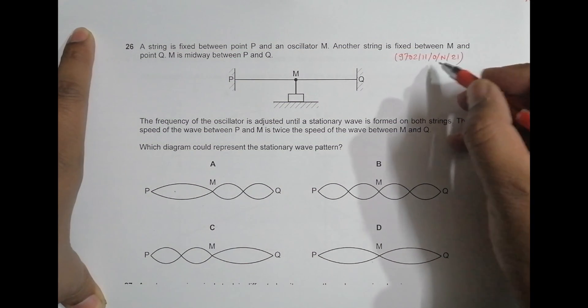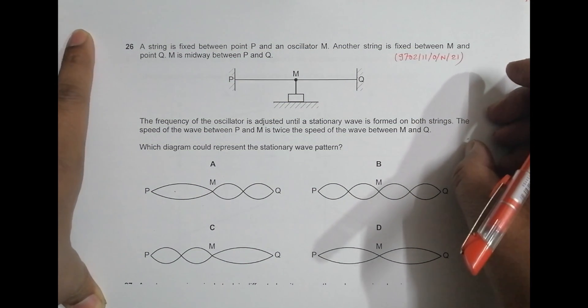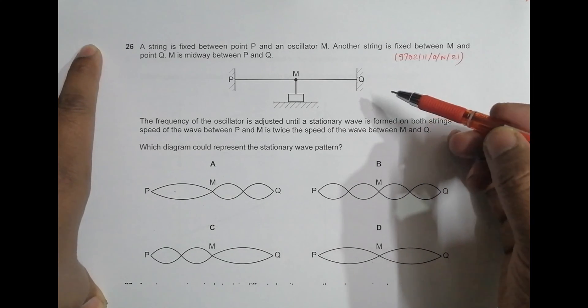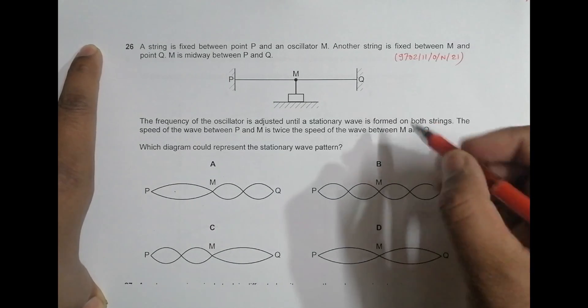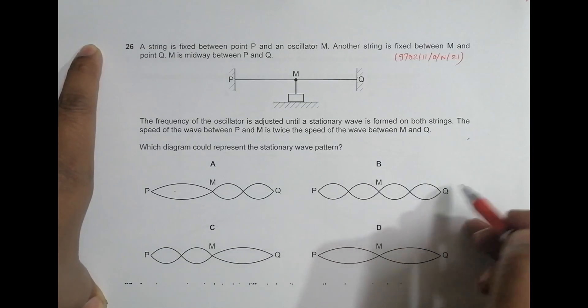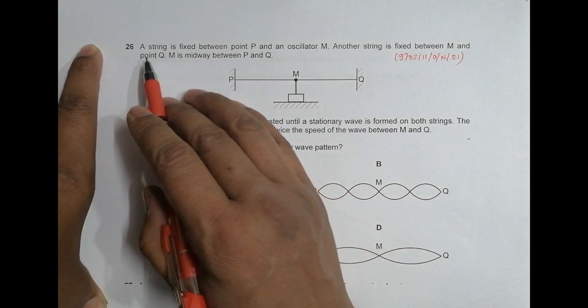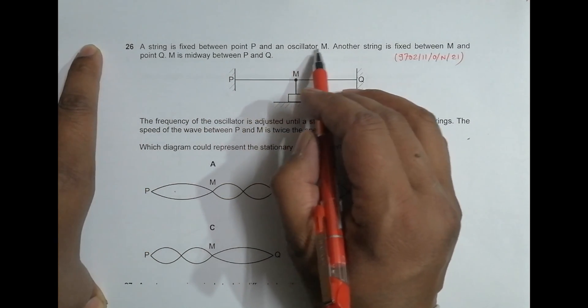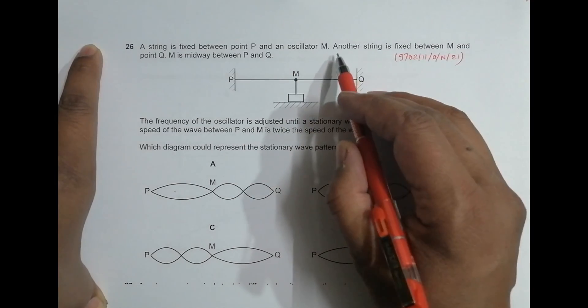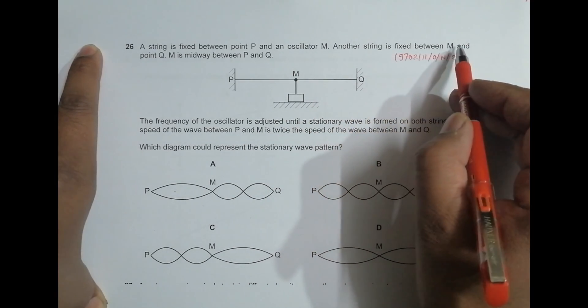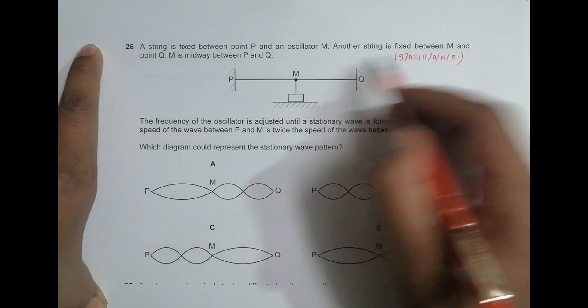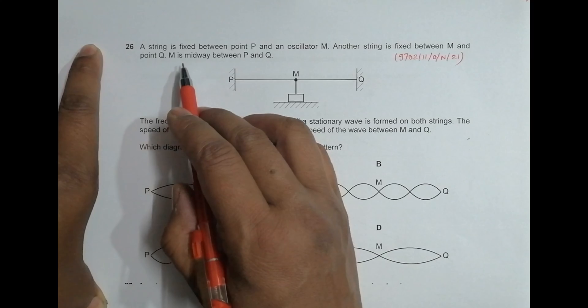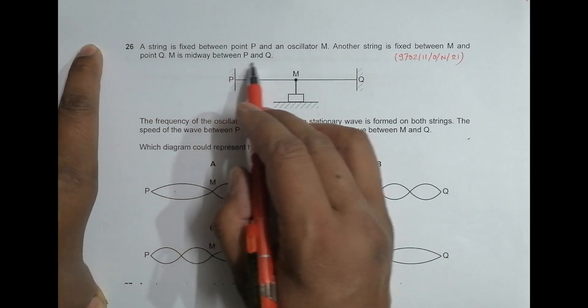Hello folks, this is 2021 October November paper 11, question number 26. This question is concerned with the topic superposition of waves. As you can see, there are some stationary waves here. It says that a string is fixed between point P and an oscillator M. Another string is fixed between M and a point Q. Though they look like a single string, they are different strings. M is midway between P and Q.